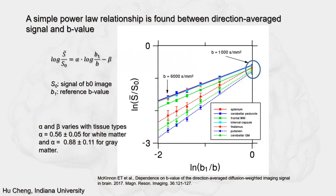A simple power-law relationship is found between the direction-averaged signal and b-values. They examined up to b-values of 6,000 and observed a linear relationship between the log of the direction-averaged signal and the log of the b-value. The coefficients alpha and beta vary with tissue types. For white matter, alpha is close to 0.56, and for gray matter alpha is near 0.88. This nice feature can help us separate white matter, gray matter, and CSF.